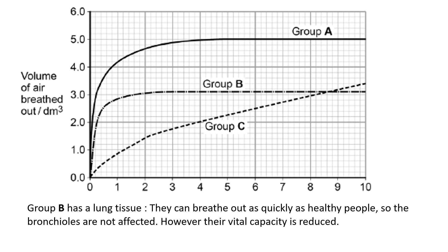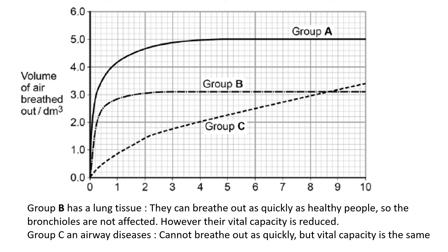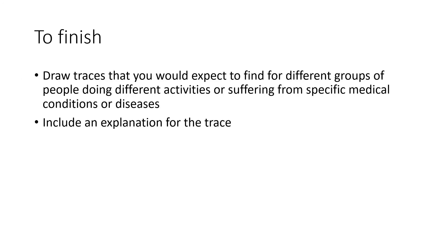Group B are most likely to have the lung tissue problem because they can breathe in and out quickly — nothing is blocking the tubes — but their vital capacity is reduced. Group C has an airway disease because they cannot breathe out as quickly; those tubes are constricted, so the rate of gas movement is affected. To finish, research specific medical conditions that affect breathing, draw the respective spirometer trace, and include an explanation of why the trace looks the way it does.